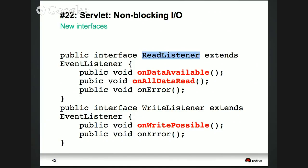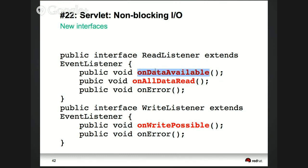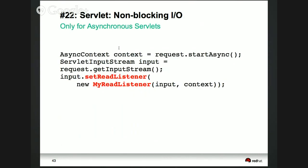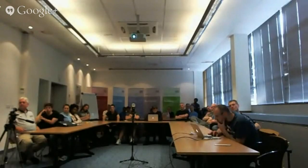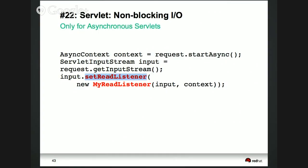The ReadListener interface has methods onDataAvailable and onAllDataRead. This works only for asynchronous servlets. You set the read listener, which triggers an internal thread that keeps looking for data to read and calls the read listener accordingly. Same thing with the write listener — if there is an ability to write out to the stream, the write listener is called. In HTTP, there's a mechanism called HTTP upgrade where you can take an HTTP 1.1 connection and upgrade it to a non-HTTP protocol — we use this for WebSockets, for example.